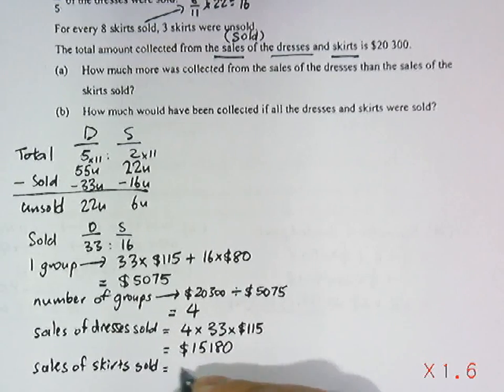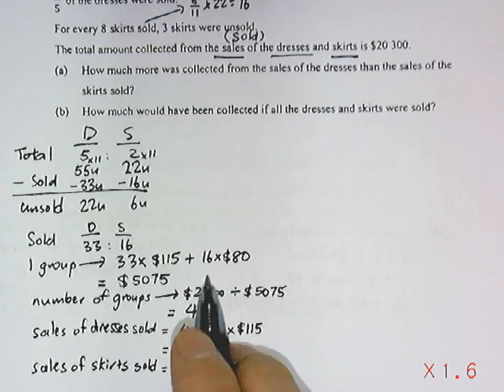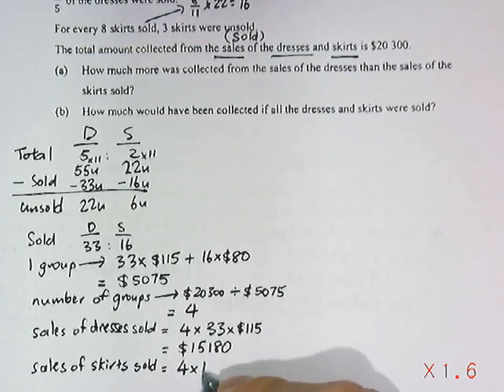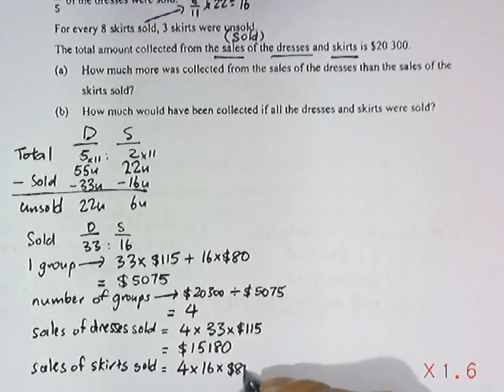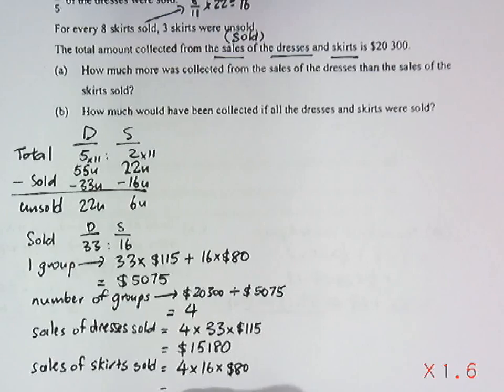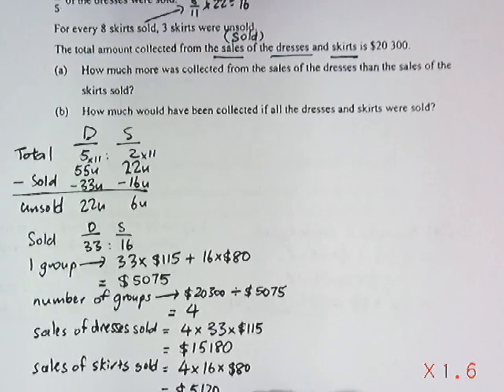Similarly for the skirts: four groups, with sixteen skirts per group at eighty dollars each, gives a total of five thousand one hundred and twenty dollars.